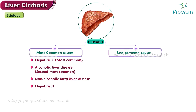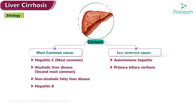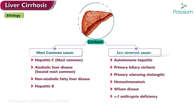Less common causes of cirrhosis include autoimmune hepatitis, primary biliary cirrhosis, primary sclerosing cholangitis, hemochromatosis, Wilson's disease, alpha-1 antitrypsin deficiency, and drug-induced causes.